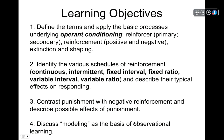That's it for this lecture. Learning objectives: define the terms and apply the basic processes underlying operant conditioning — reinforcers (primary and secondary), reinforcement (positive and negative), extinction, and shaping. Identify the various schedules of reinforcement — continuous, intermittent, fixed interval, fixed ratio, variable interval, and variable ratio — and describe their typical effects on responding. Contrast punishment with negative reinforcement and describe possible effects of punishment. Discuss modeling as the basis of observational learning.